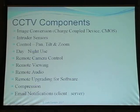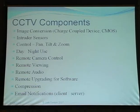Looking at CCTV system components, there's a whole range that make up the system: image conversion chips — CCD or CMOS — intruder sensors, pan-tilt-zoom control, day and night use, remote viewing, audio, software upgrades, compression, and email notifications. Each of these components has technology enabling it to work and function effectively as a whole.